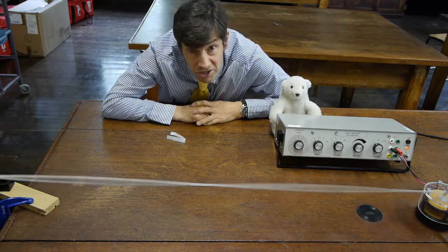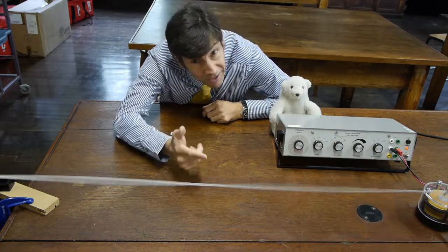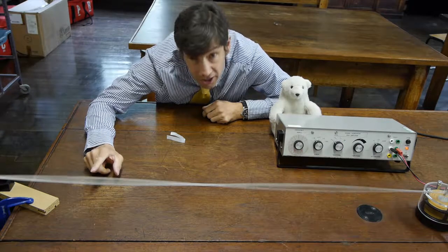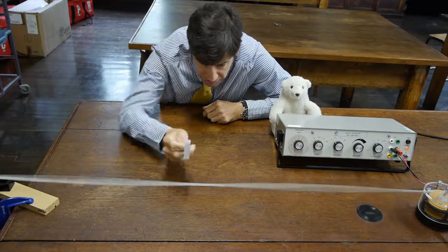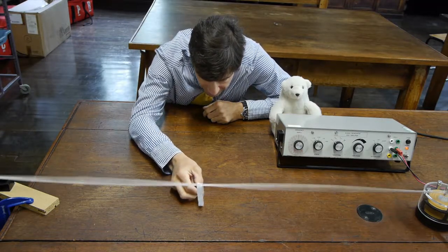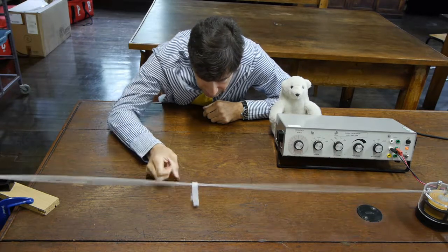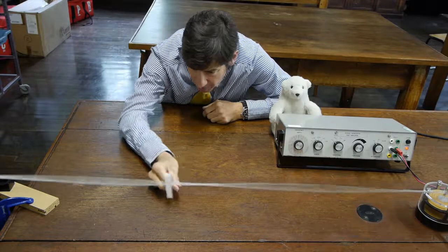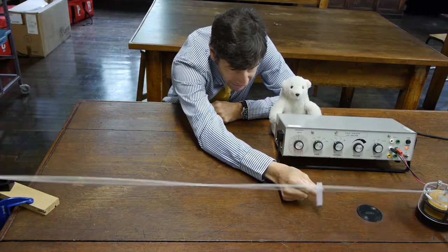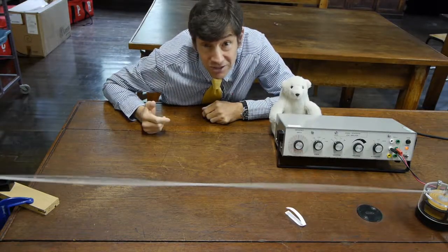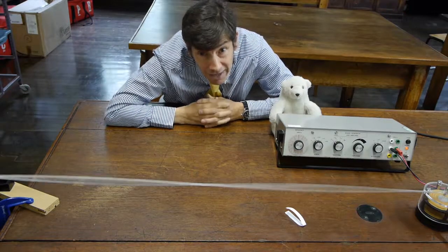There is one more experiment you can do to show that this is a node, a place where it's not moving. And this is an anti-node, where it's got maximum amplitude. You get a piece of paper, and it's quite tricky. But you can sometimes just rest it on there, and it'll stay pretty still. But try and put it on an anti-node, and you lose it straight away. Because there's a very large amount of oscillation there.